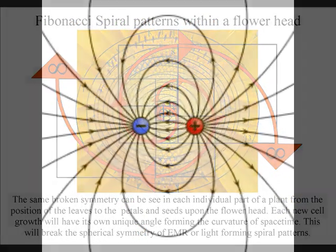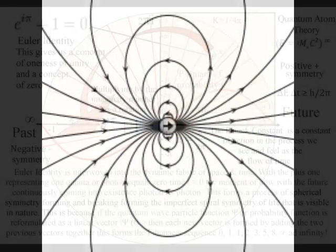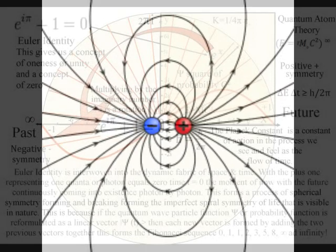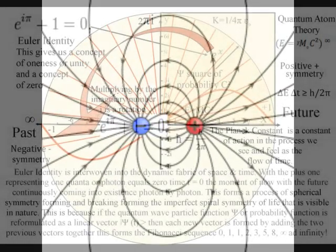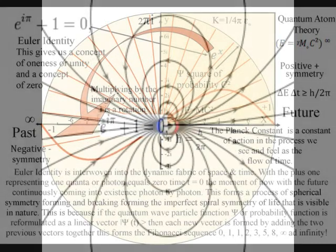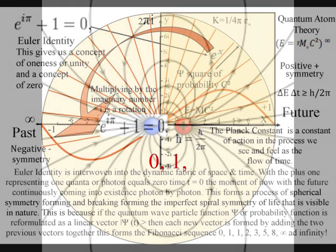As can be seen on the diagram, we already have zero representing the moment of now, time equals zero, with positive one and minus one representing the positive and negative of electromagnetic waves. Therefore, we even have the start of the Fibonacci sequence in the diagram.